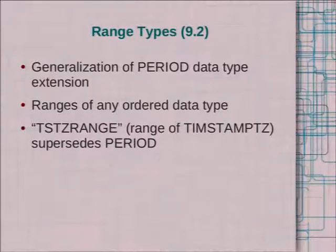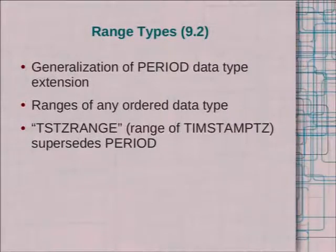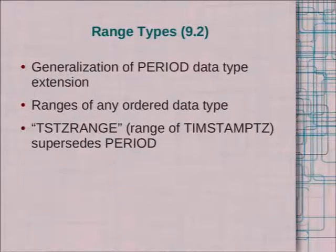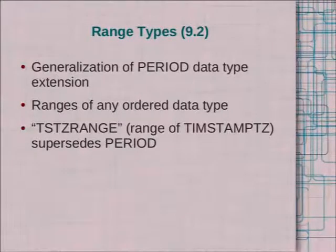Range types give us the power to use TSTZ range like in the last example. This is a generalization of the period data type, so we no longer have to use that other extension. The period data type was limited — it only worked for one data type. Range types are a generalization that can work for many data types. The key aspect is it has a beginning and an end, plus a bunch of operators and the necessary index support. As long as you've got an ordered data type you can use a range. Some are built into the system; if not, you can easily create your own.